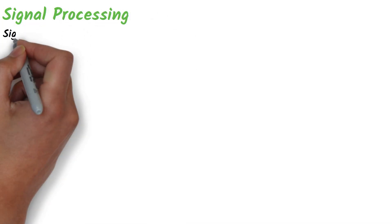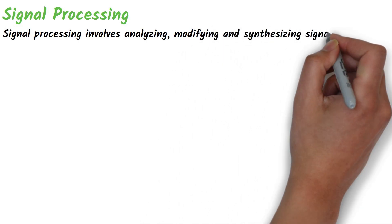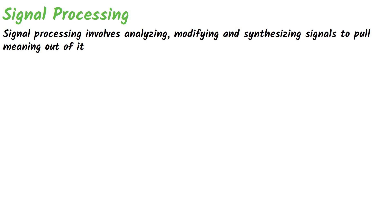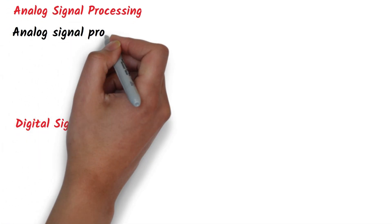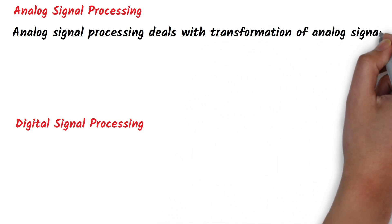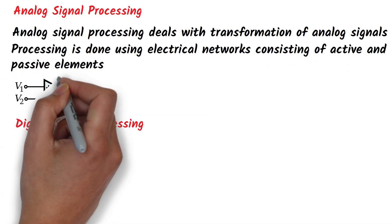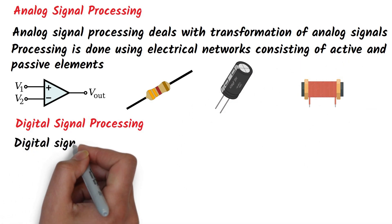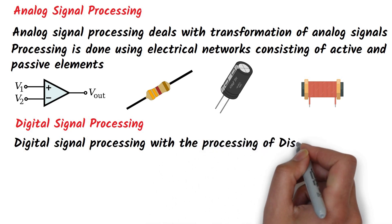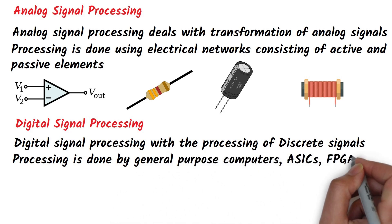Signal processing involves analyzing, modifying, and synthesizing signals to pull or extract meaning from them. Signal processing can be broadly classified into analog signal processing and digital signal processing. Analog signal processing deals with the transformation of analog signals using electrical networks consisting of active and passive elements such as op-amps, resistors, capacitors, inductors, etc. On the other hand, digital signal processing deals with the processing of discrete signals, where processing is done by general purpose computers or digital circuits.